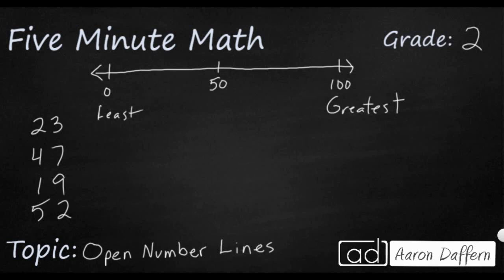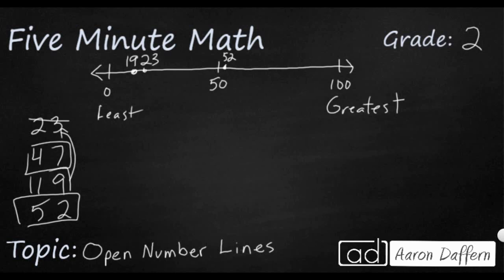Look at this 52 — 52 is just a bit above 50, so I'm going to put 52 right there. My smallest number is 19, and then 23 is pretty close to it. So I'm going to put my 19 right around here, and then I need to put my 23 really close to it. What's left is 47, and 47 is going to be very close to 50 but just on the left side of 50, so I'm going to put my 47 there.